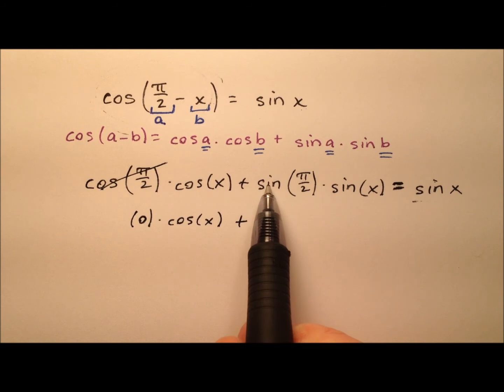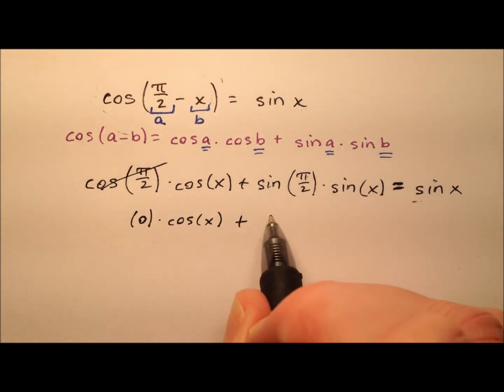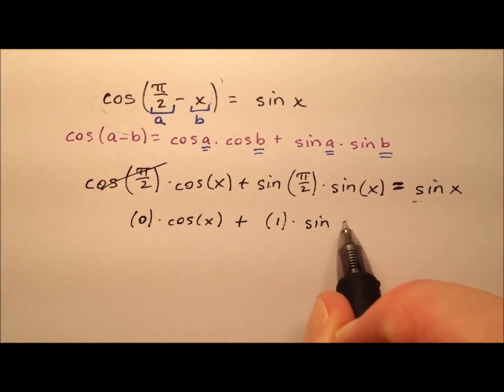plus, and then sine of pi over 2, or the sine of 90 degrees is 1, times the sine of x.